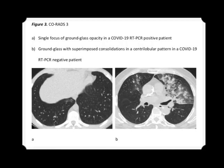An example of CORADS 3: a single focus — an RT-PCR positive patient showing a single focal ground glass opacity — and ground glass opacities with superimposed consolidations in a centrilobular pattern in an RT-PCR negative patient.